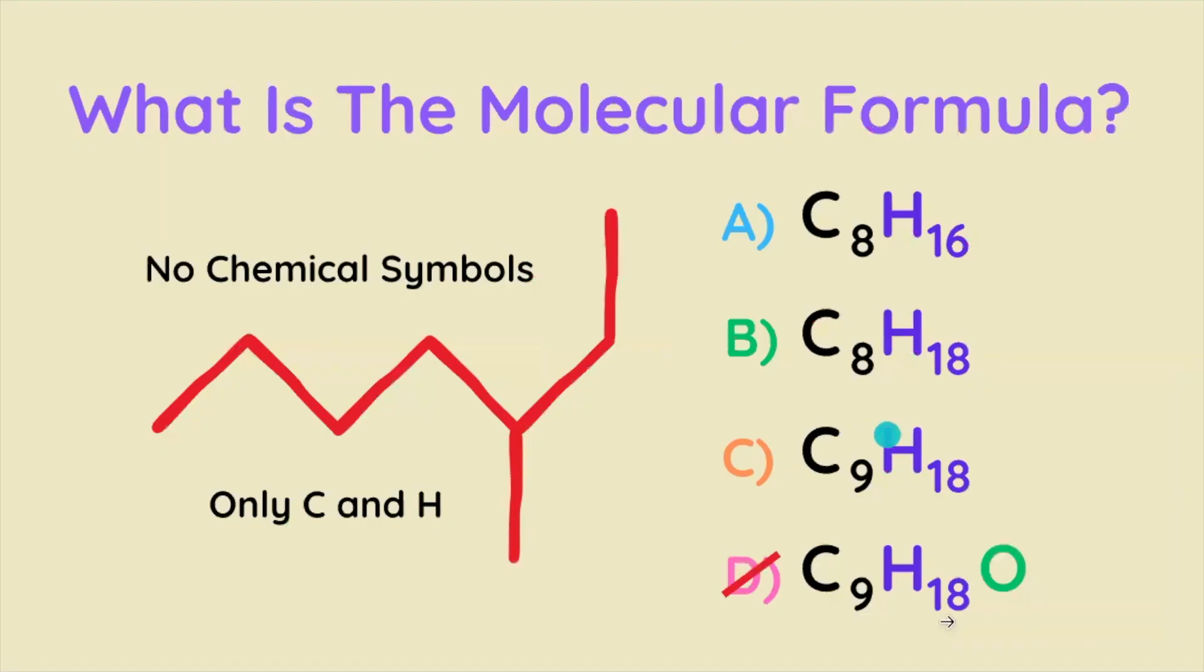Thus by definition C9H18O cannot be the correct molecular formula because if oxygen were present in this molecule we would see the O chemical symbol somewhere in this structure and we don't. So C and H are the only elements present in this molecule.